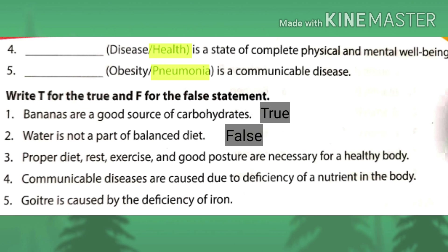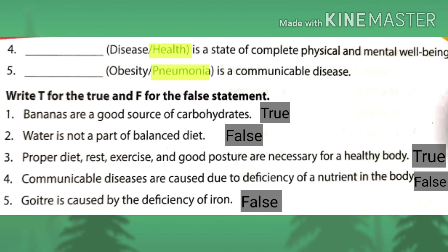Third: proper diet, rest, exercise, and good posture are necessary for a healthy body — true, as we discussed these are all very necessary for a healthy body. Fourth: communicable diseases are caused due to deficiency of nutrients in the body — false, they are caused by germs.